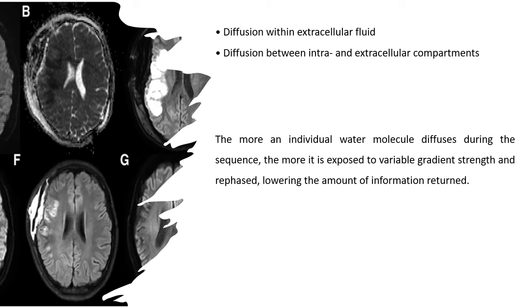So the more an individual water molecule diffuses during the sequence, the more it is exposed to variable gradient strength and rephased, lowering the amount of information returned. This takes place on a much smaller scale than a single voxel.